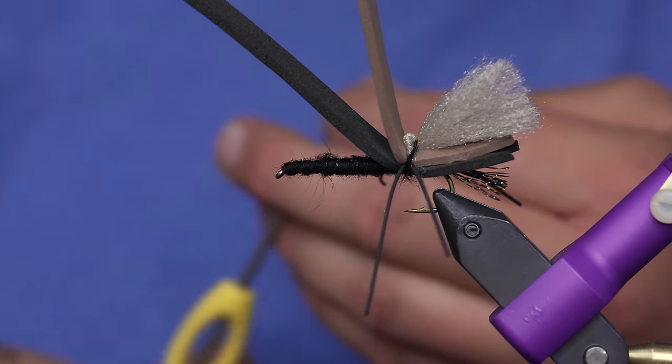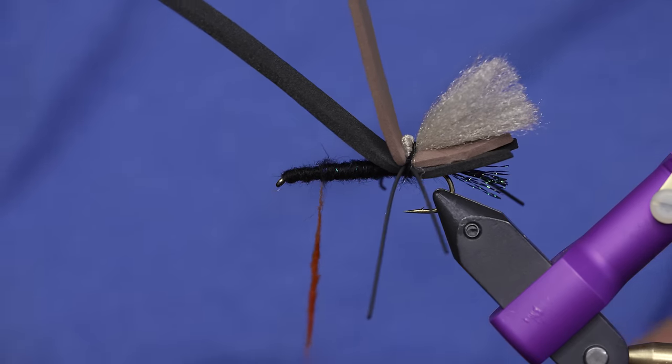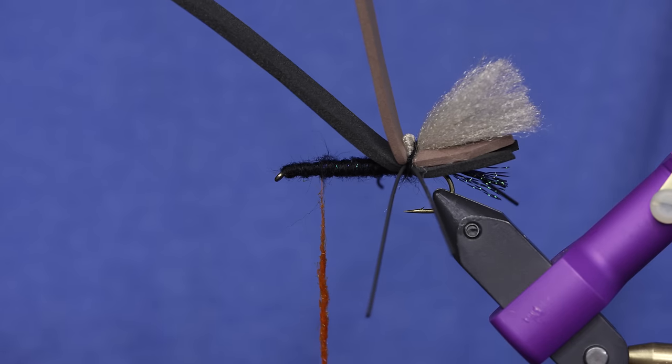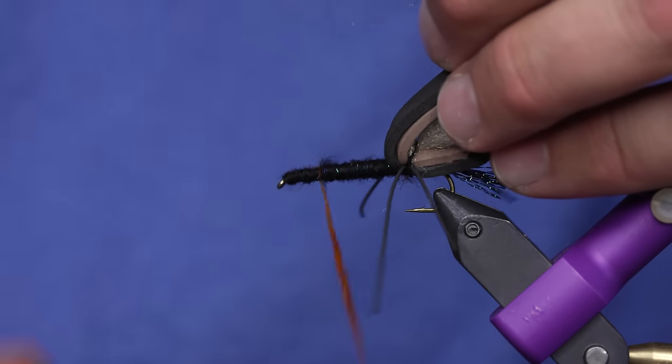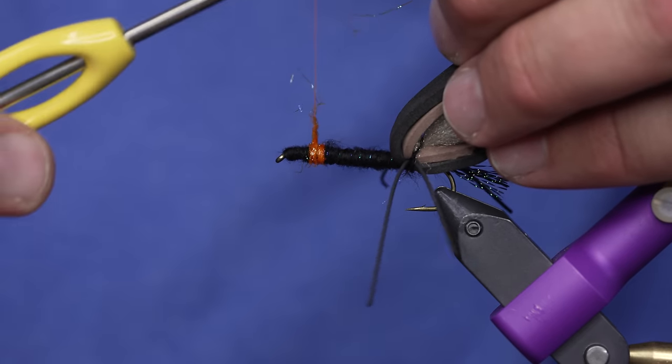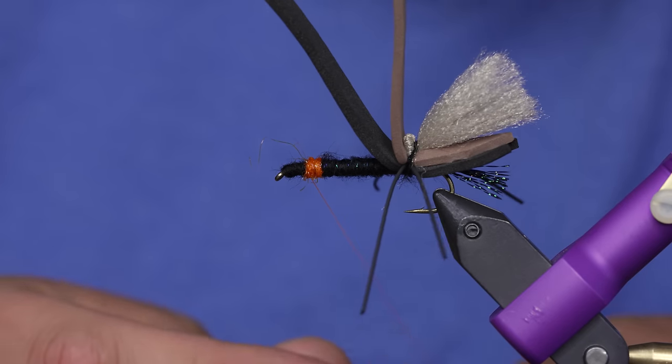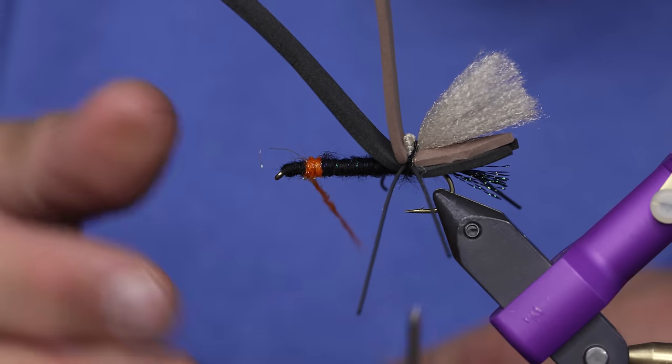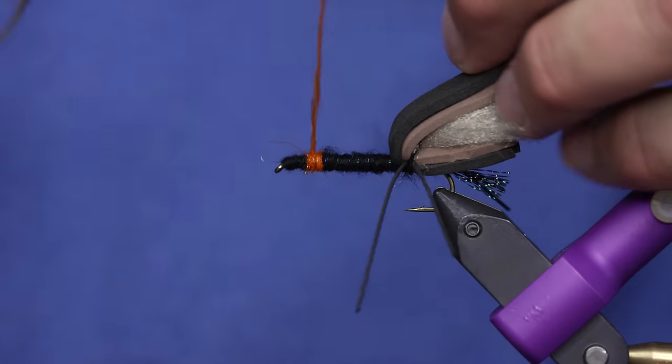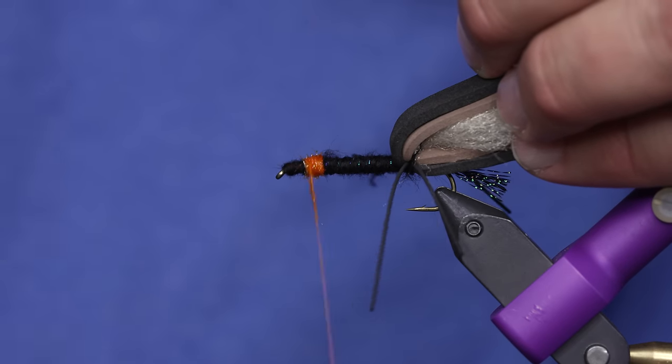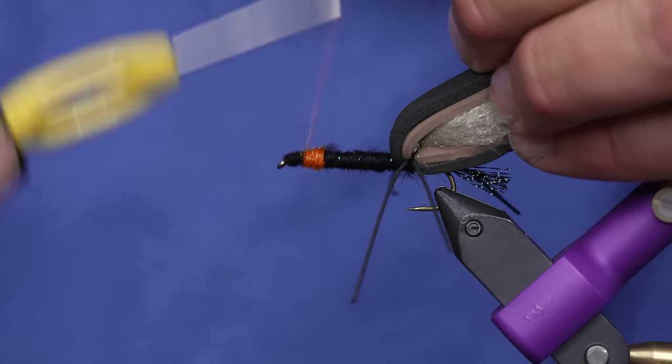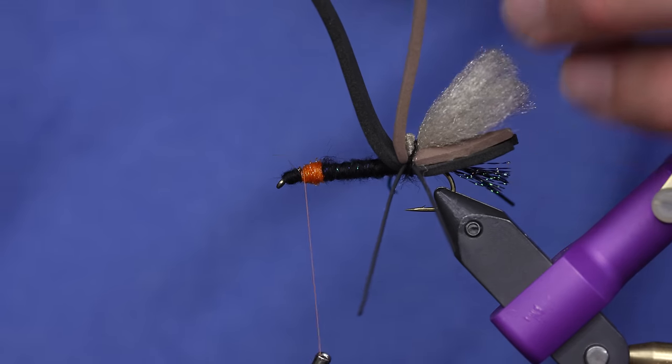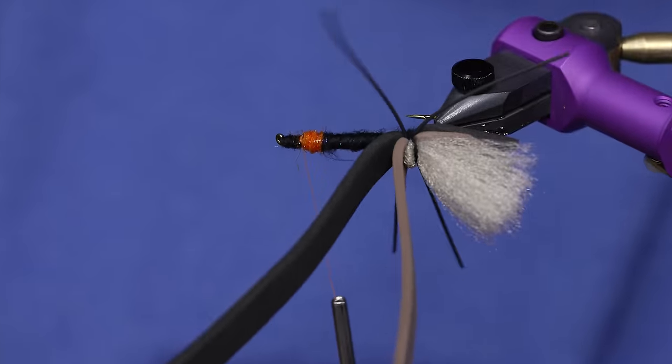So I'll dub that up nice and tight. And just make a little kind of orange hot spot. So this is just to kind of tell the fish that hey, I'm a salmon fly because I do have some orange on me. And that's all we'll do right there.